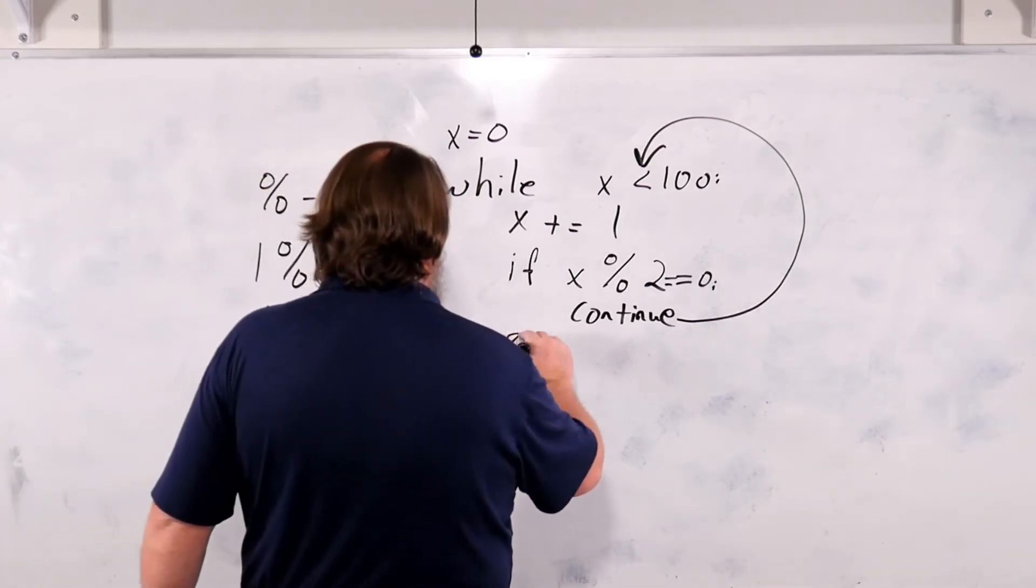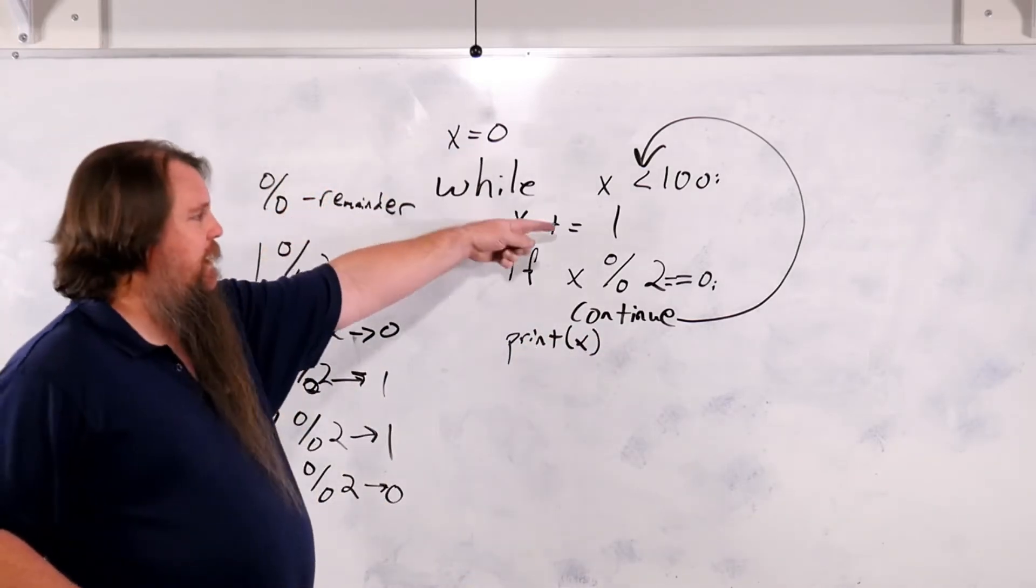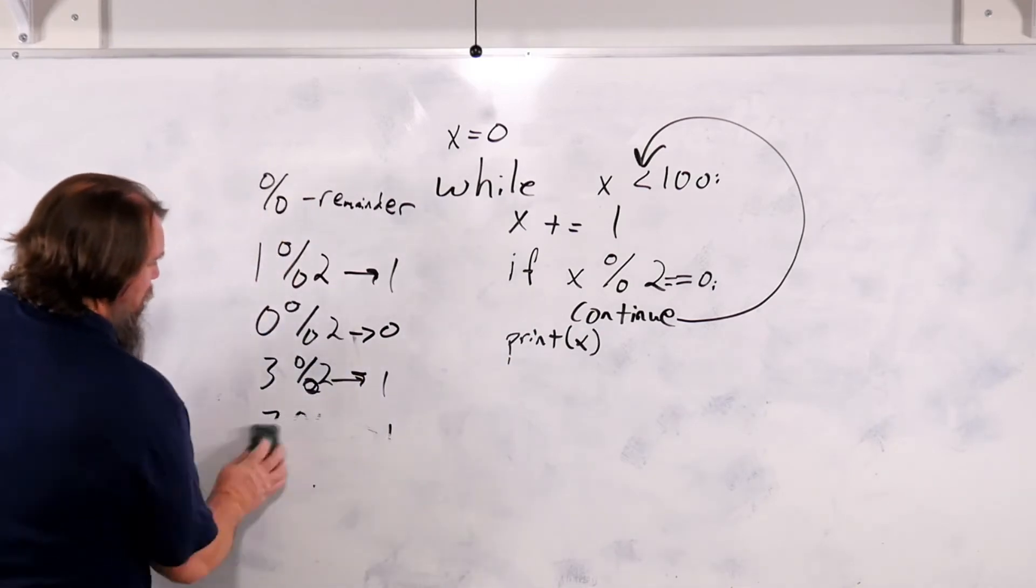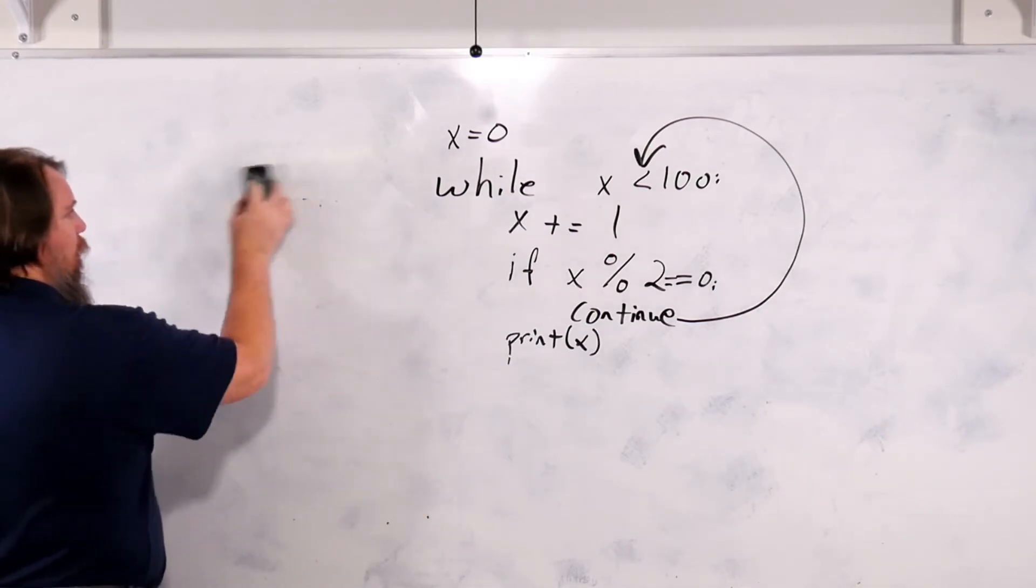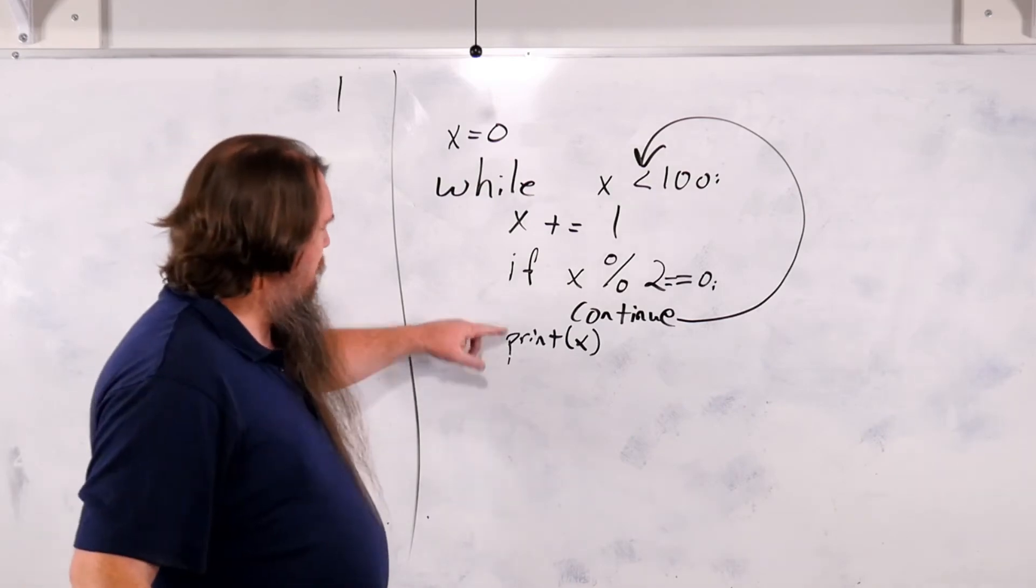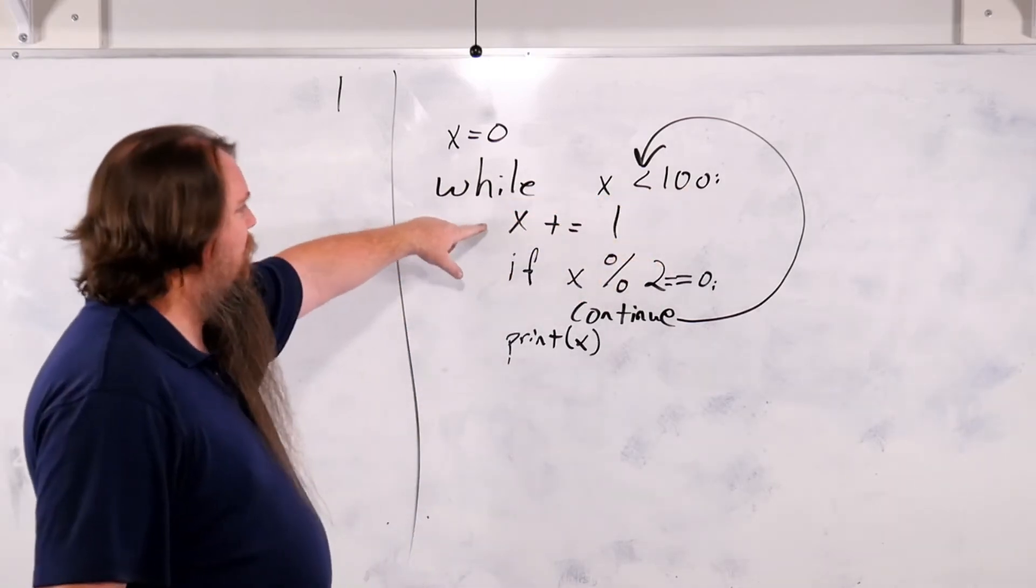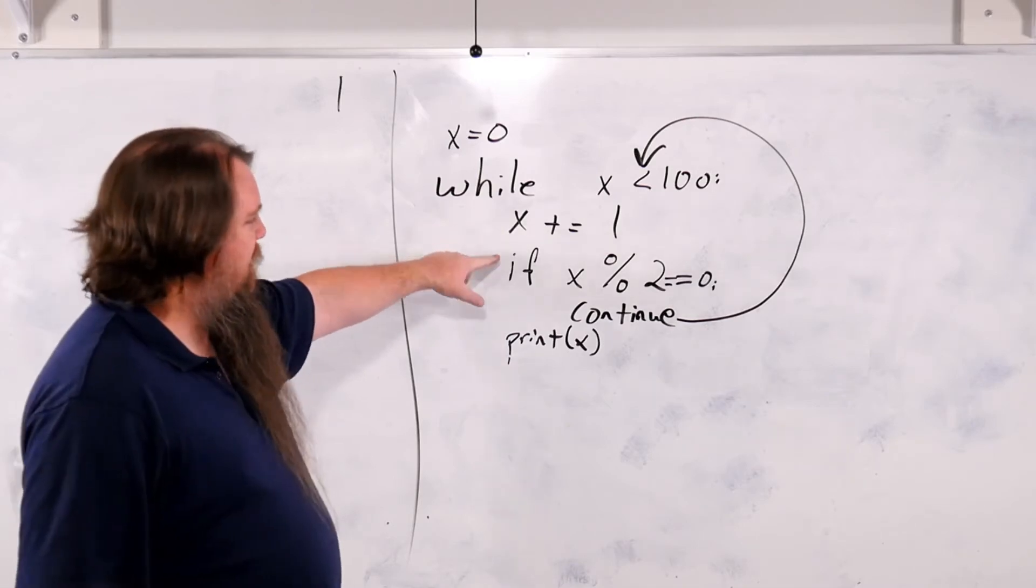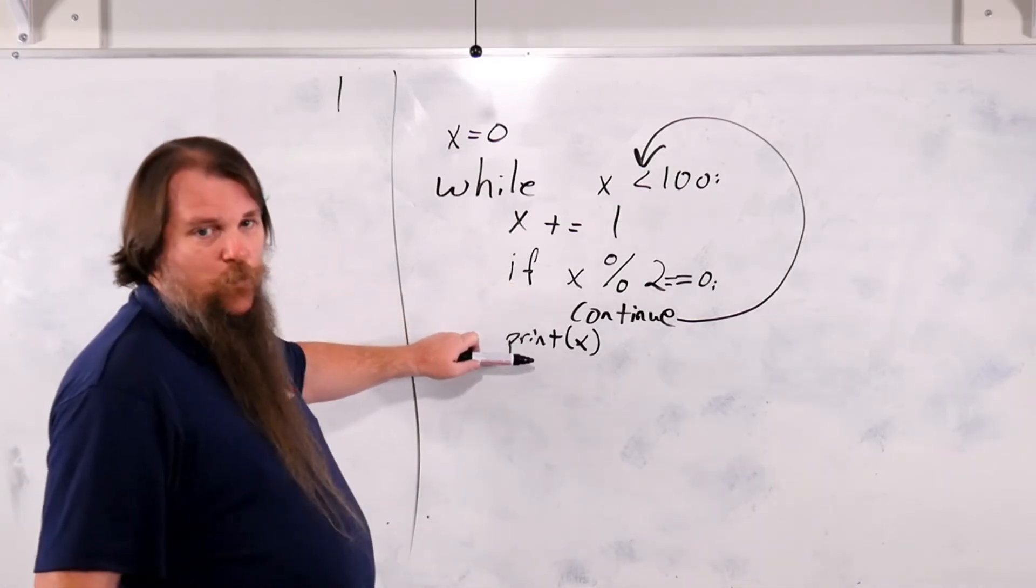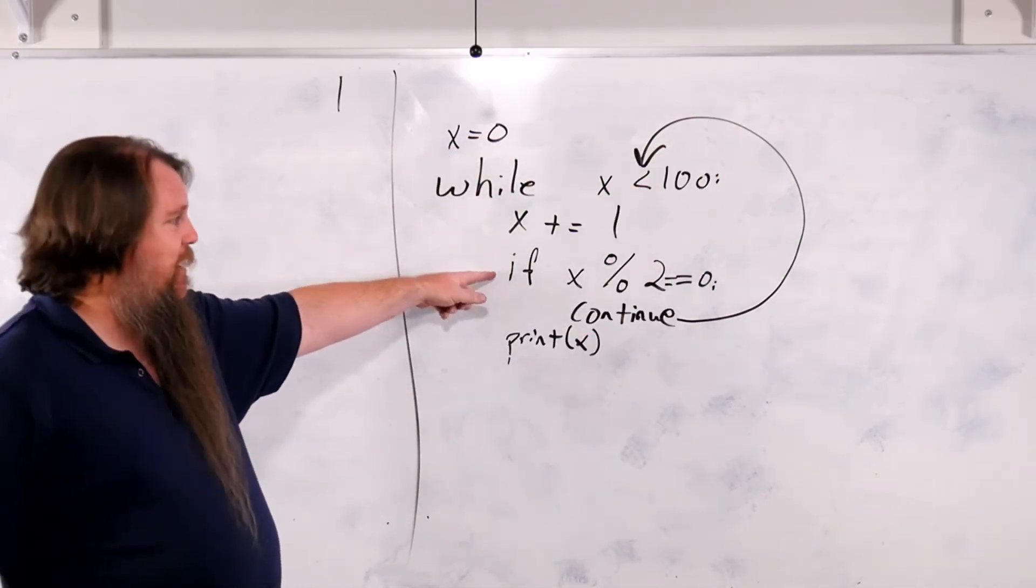So if we now have a print x, x will be set to 0 in the first loop, it'll increment to 1, this will be false, and so it will print. So it will print the value, this will print out 1. Now it goes back up to the top. Now x is 1, that's less than 100, so it continues looping. X is incremented to 2. Now we say, is x mod 2 equal to 0? Is the value even? It is. So we hit the continue statement. We don't run the print, we just jump back up to the top. Now x gets incremented to 3. It's not even, so we print.